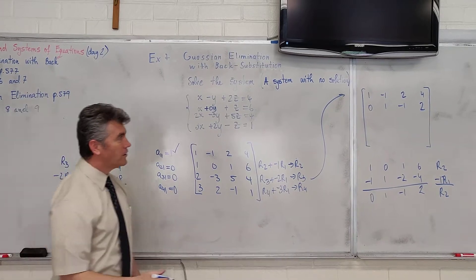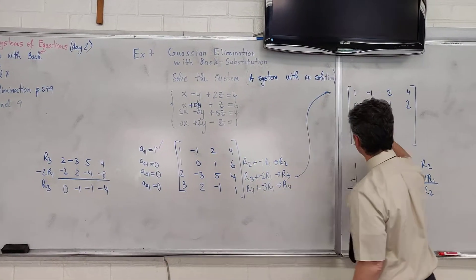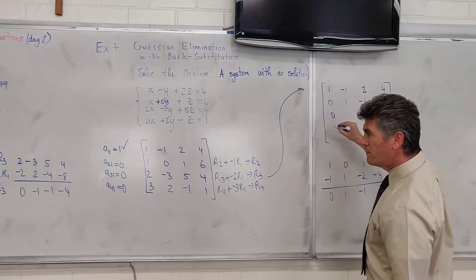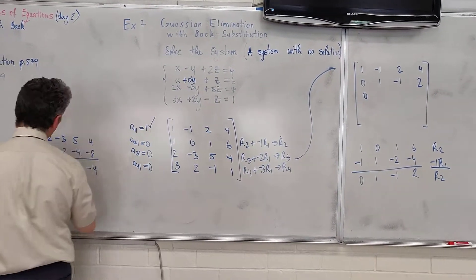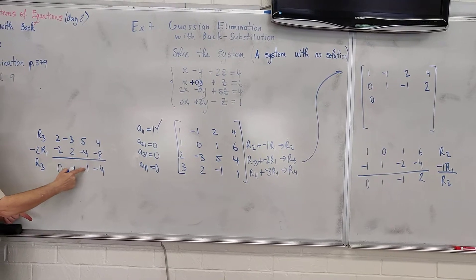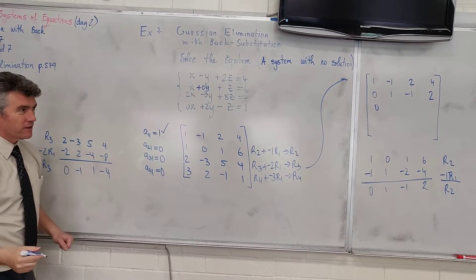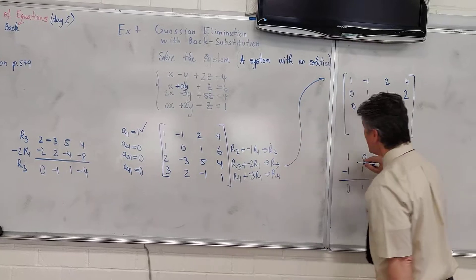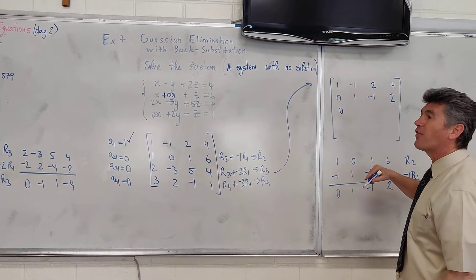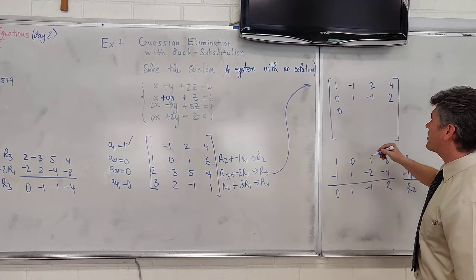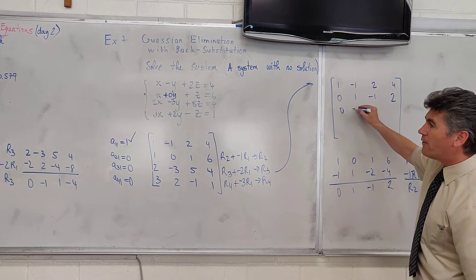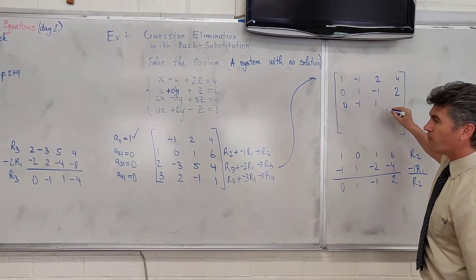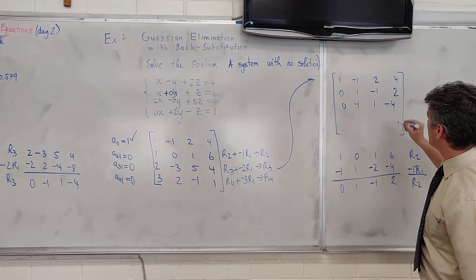Let's enter that. We have a problem. Sorry about that. 5 plus negative 4 is actually positive 1. Good thing that I caught it. Like I said, the math that we are doing is not that complicated. The mistakes are really easy to make. So, 0, negative 1, positive 1 and negative 4.